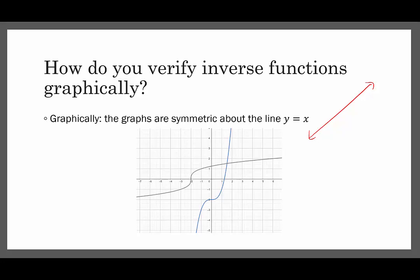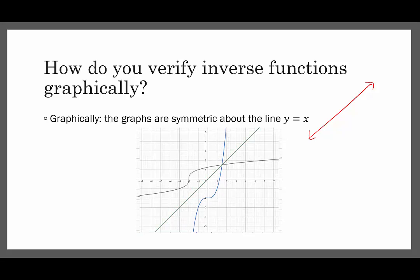So for example, here are two functions. They pass the horizontal line test so that means each of them have an inverse function too. And if we were to draw this line here, well I don't have to draw that line because there it is. So this is the line y equals x. And you can see these two graphs, the gray and the blue, they would be symmetric about that line y equals x. So the gray function and the blue function are inverse functions of each other.